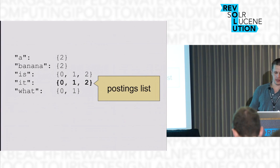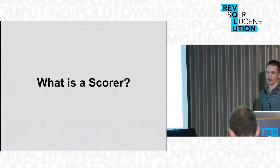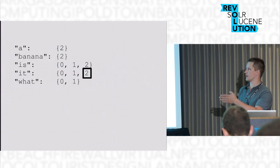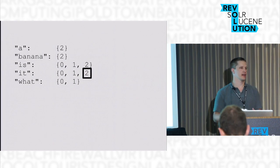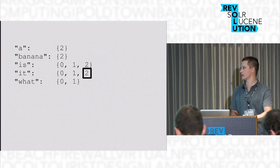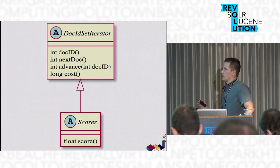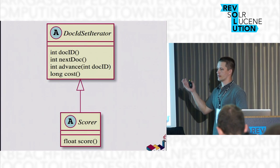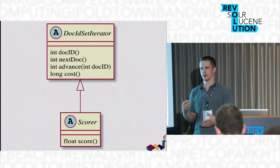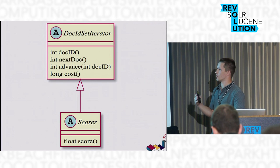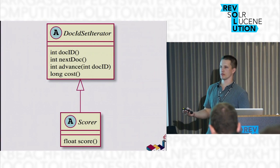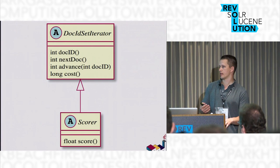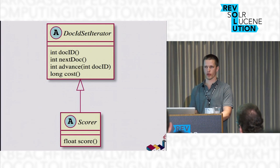We will refer to the term scorer many times during this talk and we need to figure out what the scorer is. The scorer is a fairly simple idea — it's just the forward-only iterator on the postings list. The scorer is an iterator. And when we write custom queries, we are dealing with scorers so much. The scorer API is essentially an iterator with a fairly simple interface: we have a method to get the current document ID, a method to move to the next document, a method to advance over many documents to a given one, and a cost estimation method. The scorer itself adds a method which allows you to get the score for the current document.